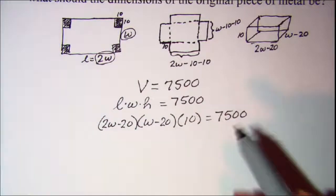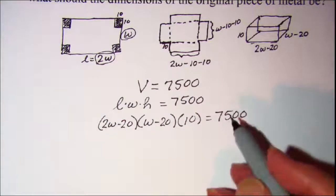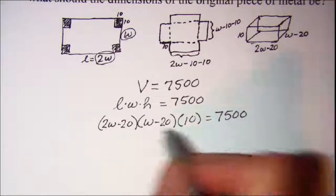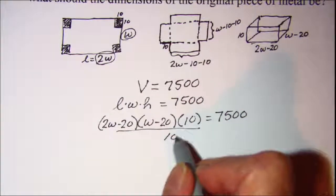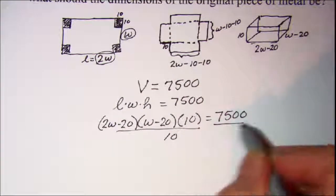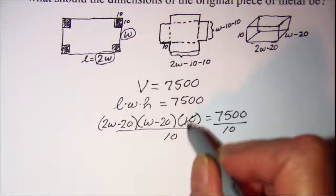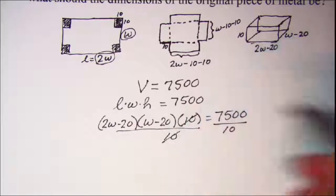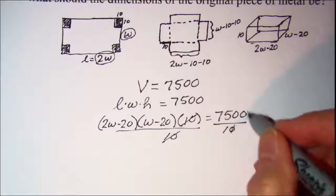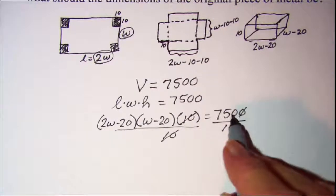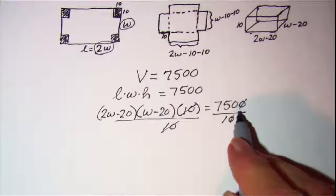I'm going to simplify by dividing both sides by 10. This 10 will cancel with this one, and that will make this 750 instead of 7500.